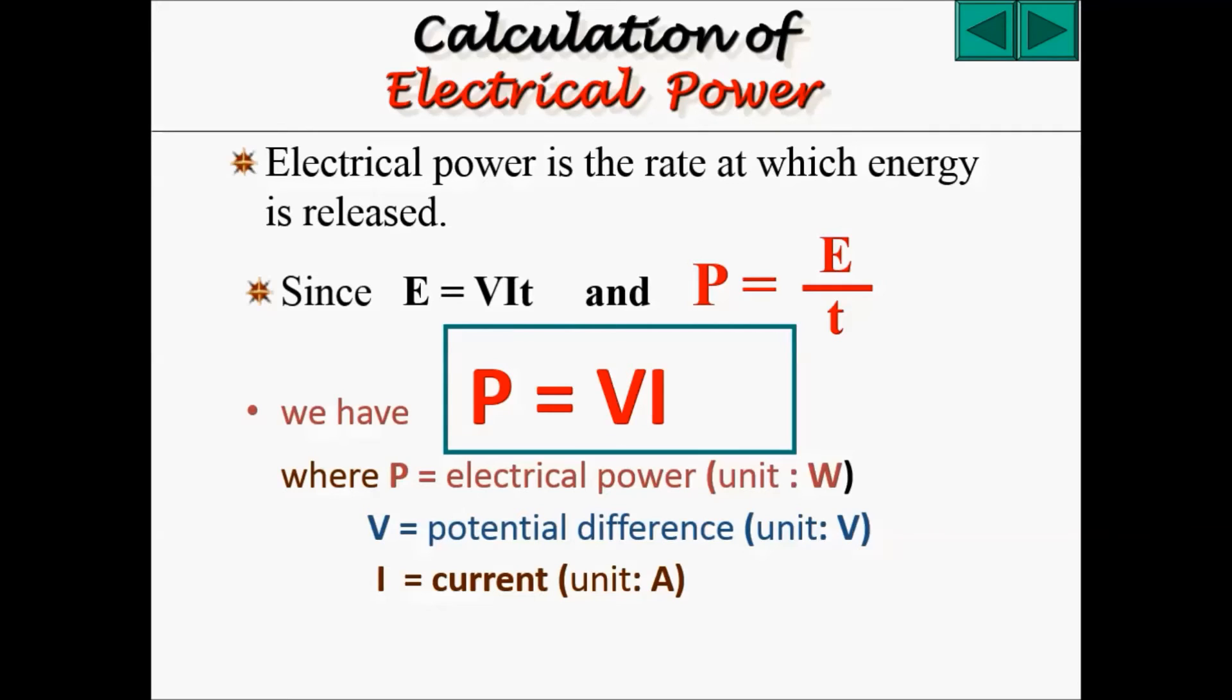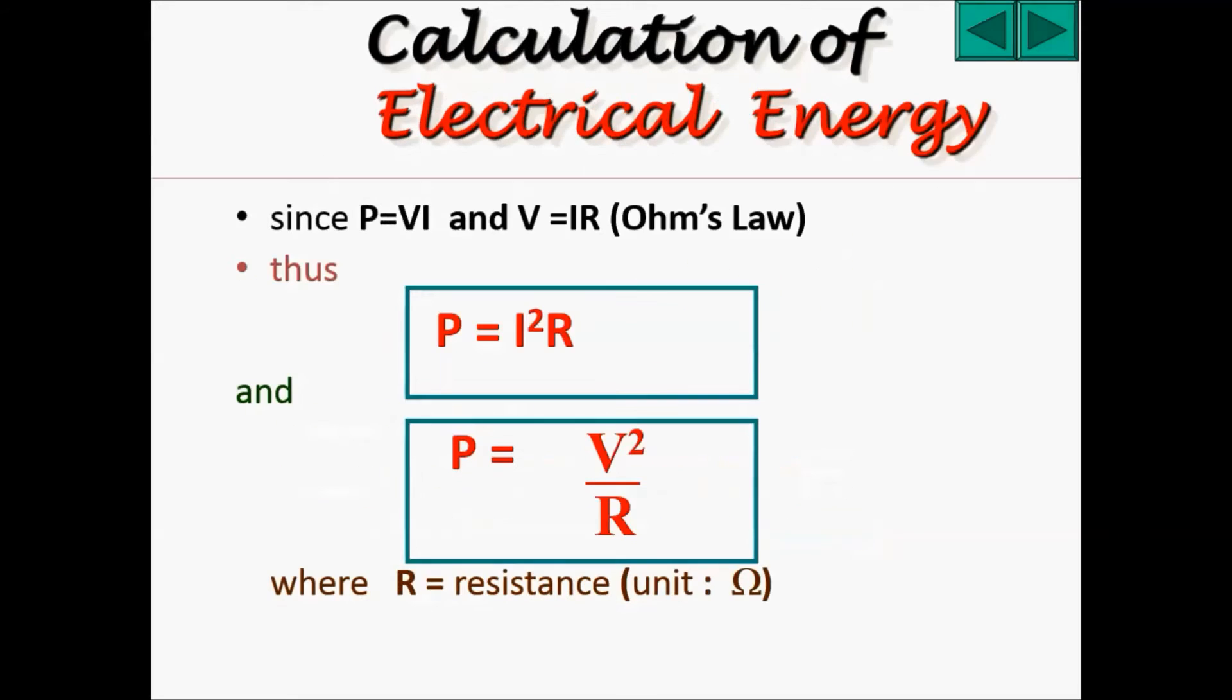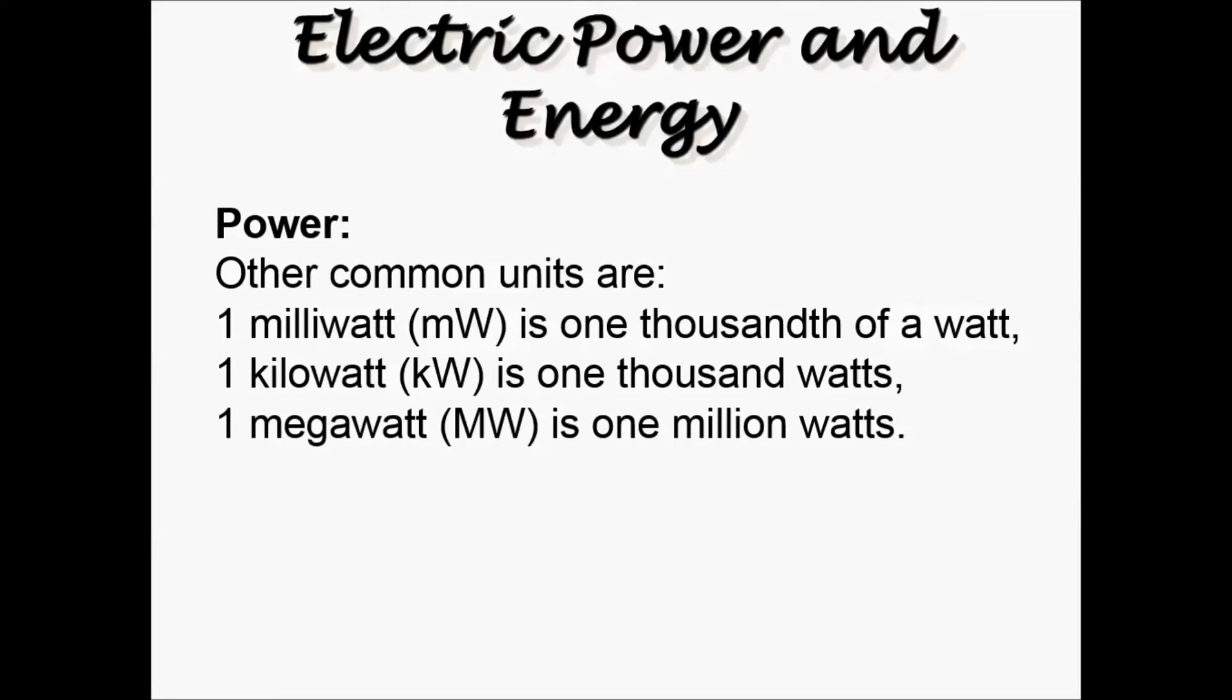Using this formula, we can calculate again two more subformulas, which are P equals to I squared R, and P equals to V squared over R. Other common units for power, we commonly use the milliwatt, the kilowatt, and the megawatt.